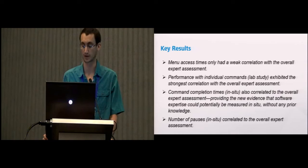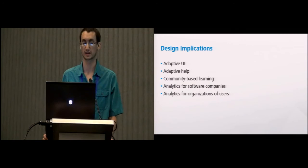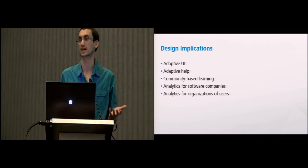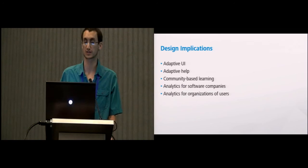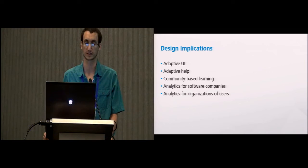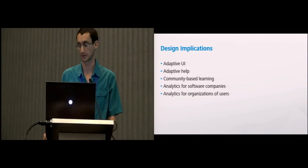We'll wrap up quickly with some discussion. What are the design implications? I talked about it before: adaptive UIs, adaptive help systems, but also there's opportunities for community-based learning. Imagine on a discussion board, instead of getting an answer from someone with a badge because they've answered many questions, you could see a representation of what their actual expertise level is. There's also opportunities for software companies to measure the expertise of their users and understand how they're progressing, especially if new learning materials are provided. And there's opportunity for organizations using the same software to potentially measure the expertise level of their users.